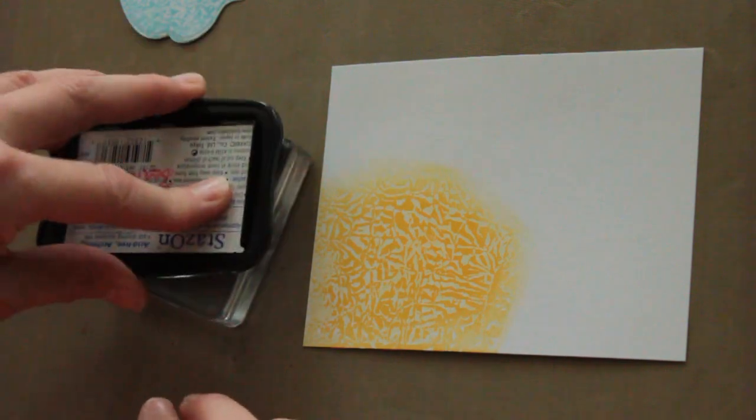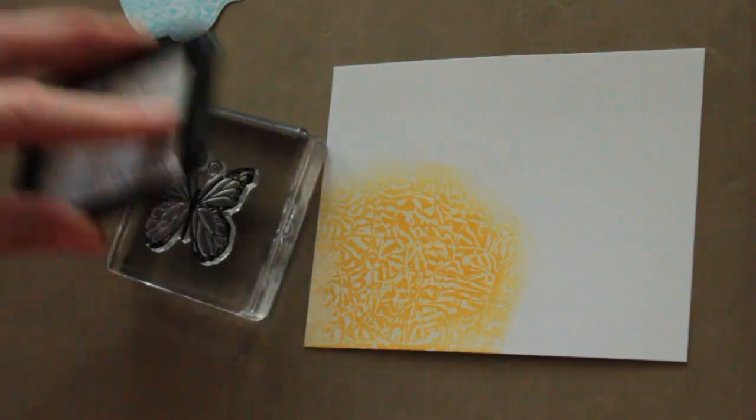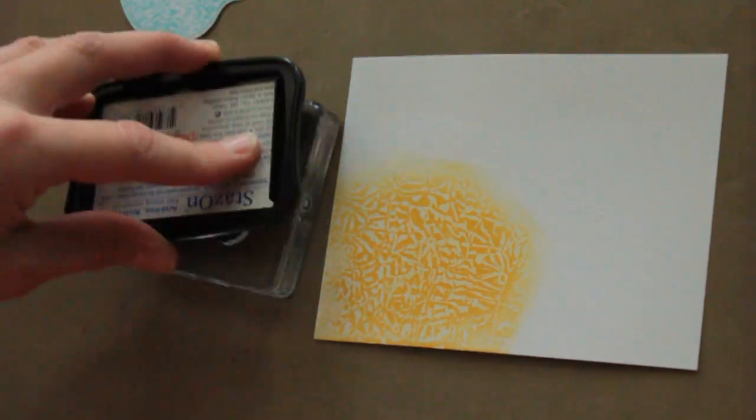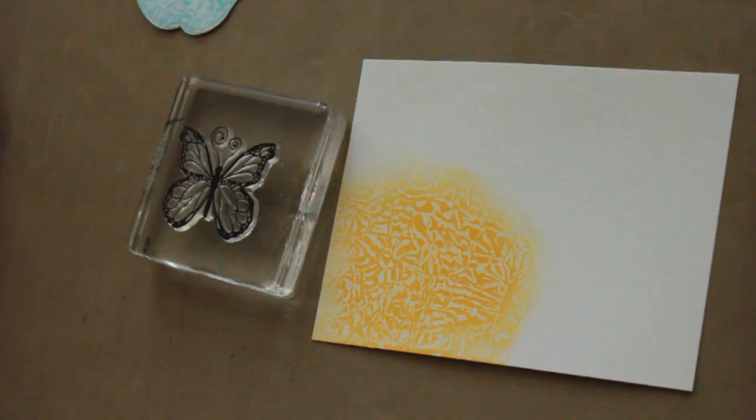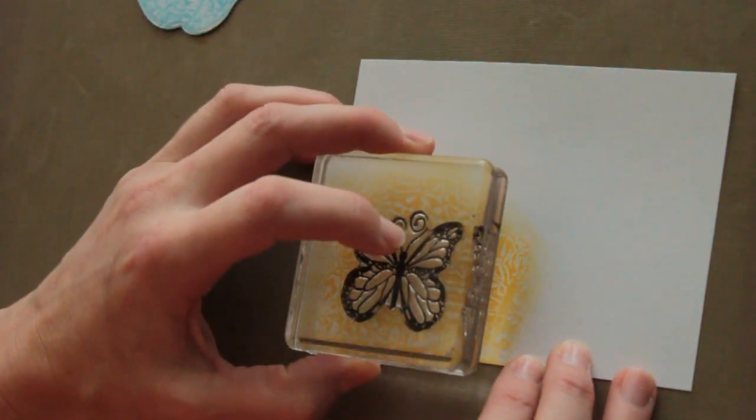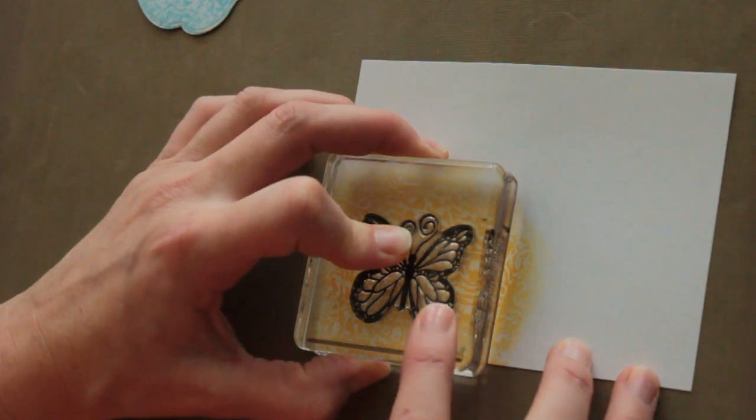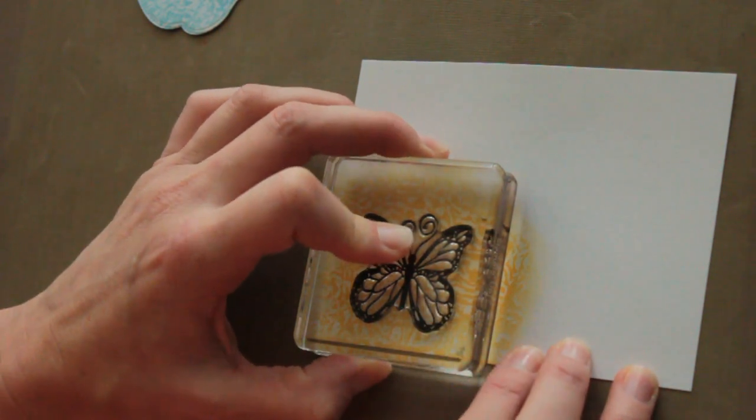I'm using Stazon. When stamping on glossy cardstock, just be careful because it is slippery. Just stamp down and pull straight back up.